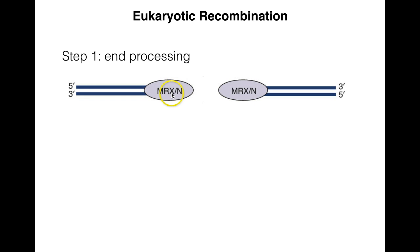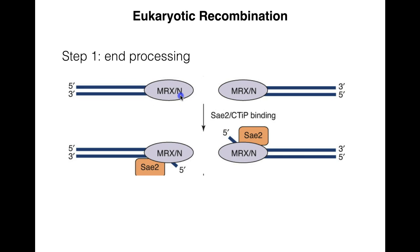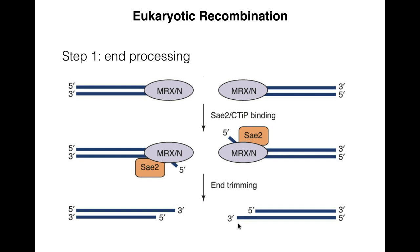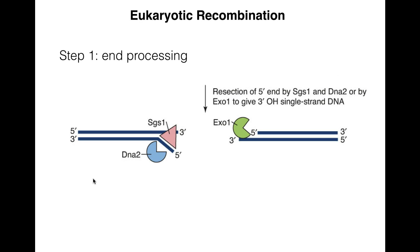First, the double-strand break is recognized by the MRX or MRN protein. MRX is the protein that recognizes the break in yeast, while MRN recognizes double-strand breaks in humans. In yeast, MRX works with SAE2, which has endonuclease activity, to trim back the end. After trimming, we have a short three-prime overhang, consistent with the pattern we've been working on.